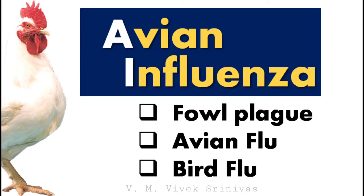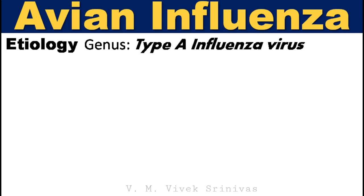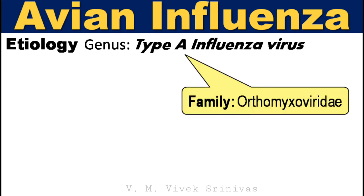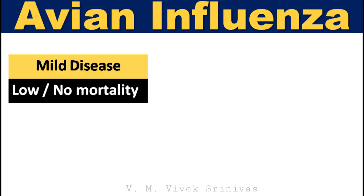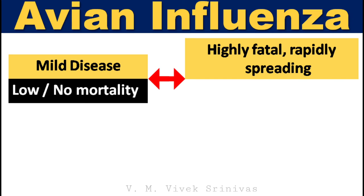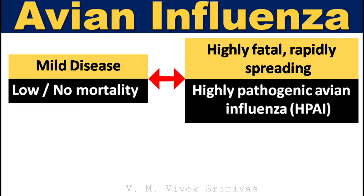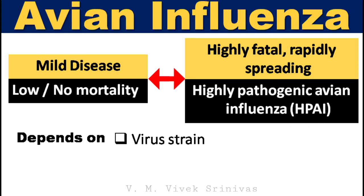Avian influenza. The other names for this viral infection are fowl plague, avian flu, and bird flu. Avian influenza is caused by the genus type A influenza virus of the family Orthomyxoviridae. This highly contagious virus affects food-producing birds like chicken, turkey, quail, and guinea fowl, as well as pet birds and wild birds. The infection can be characterized as mild disease with low or no mortality, or it can be highly fatal and rapidly spreading, caused by highly pathogenic avian influenza. The severity depends on the virus strain — whether it is a low pathogenic or highly pathogenic strain — as well as host factors and environmental factors.